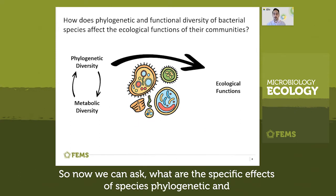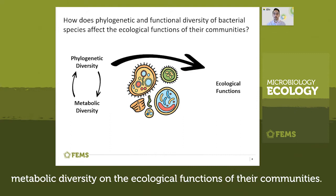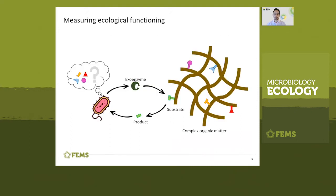So now we can ask: what are the specific effects of species' phylogenetic and metabolic diversity on the ecological functions of their communities?